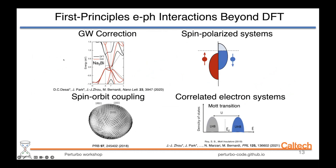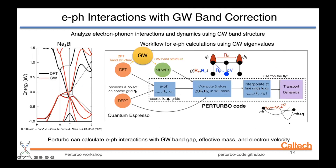Moving to the second part — electron-phonon interactions beyond normal density functional theory. First, the GW band correction: for certain materials, GW correction has a significant impact. For example, in Na3Bi, a 3D topological semimetal, DFT largely underestimates the band velocity of the conduction bands, and GW corrections are needed to get the correct electron velocity.